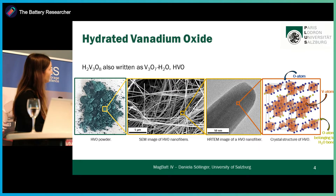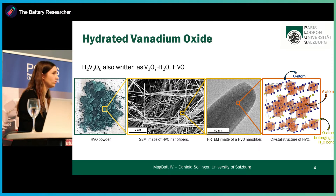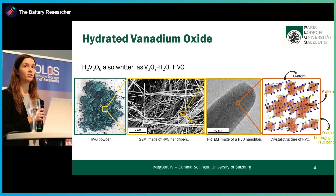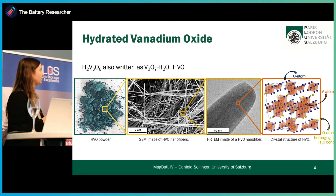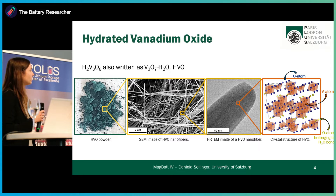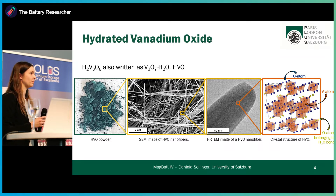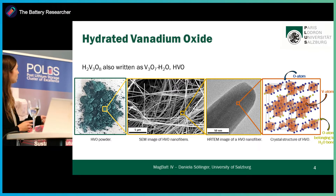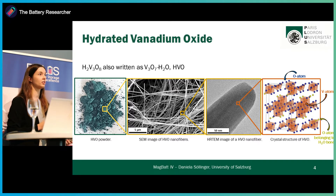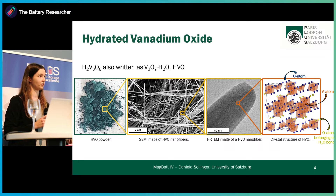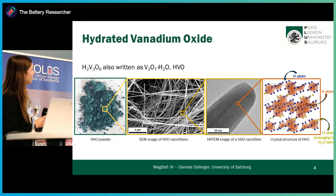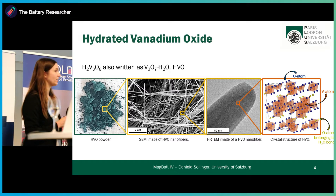Hydrated vanadium oxide is a layered structure. Due to its open layer structure, intercalation of different ions like lithium, sodium, magnesium, and zinc is in principle possible. Furthermore, it has a mixed valence state of vanadium 5+ and 4+. Since vanadium in oxidation state 5+ is orange and vanadium in oxidation state 4+ is blue, the mixture of both oxidation states leads to a green color, as seen in the figure. This mixed valence state can further lead to higher electrical conductivity compared to vanadium pentoxide. Hydrated vanadium oxide also has a nanofiber morphology which is beneficial for the electrode-electrolyte interface.